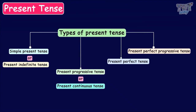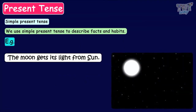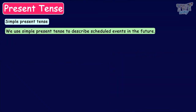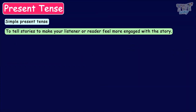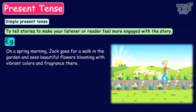Now let's revise the usage of simple present tense. We use simple present tense to describe facts and habits. For instance, the moon gets its light from the sun. We use it to describe scheduled events — the train leaves at five o'clock. We also use it to make the listener or reader feel more engaged with the story. For example, on a spring morning, Jack goes for a walk in the garden and sees beautiful flowers blooming with vibrant colors and fragrance.